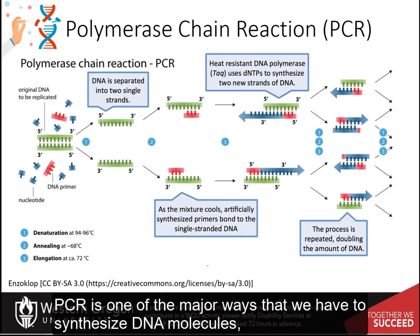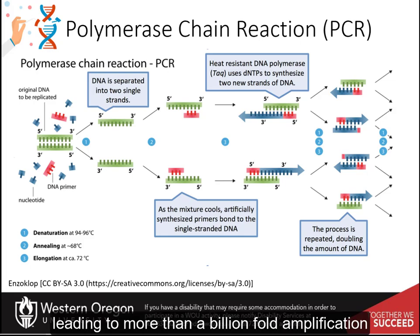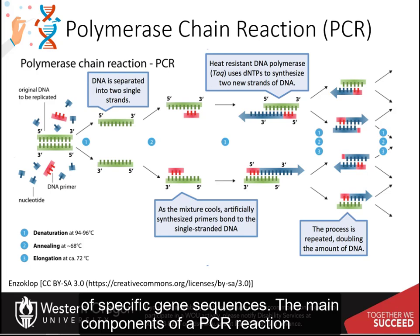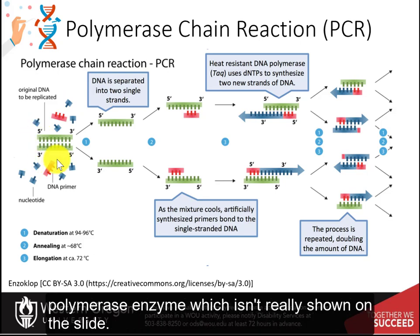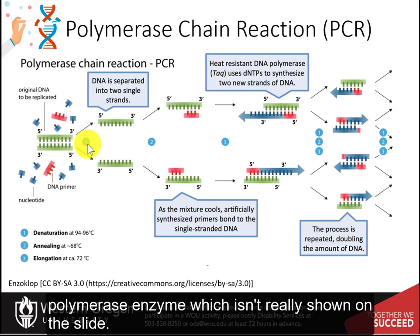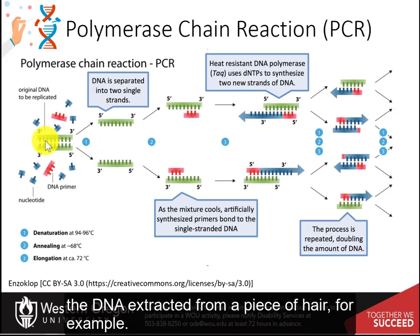PCR is one of the major ways that we have to synthesize DNA molecules, leading to more than a billion-fold amplification of specific gene sequences. The main components of a PCR reaction are the template, the primers, the nucleotide triphosphate building blocks, and the DNA polymerase enzyme. The DNA template contains the specific region or gene that you wish to amplify, such as the DNA extracted from a piece of hair, for example.